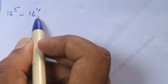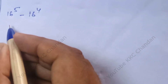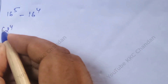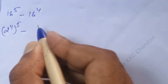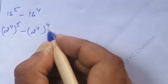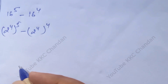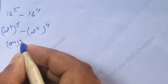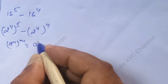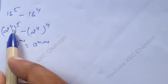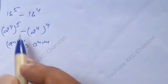16 power 5 minus 16 power 4 can be written as: 2 power 4, whole power 5, minus 2 power 4, whole power 4. We know that a power n, whole power m, can be written as a power n into m, according to the algebraic rule.